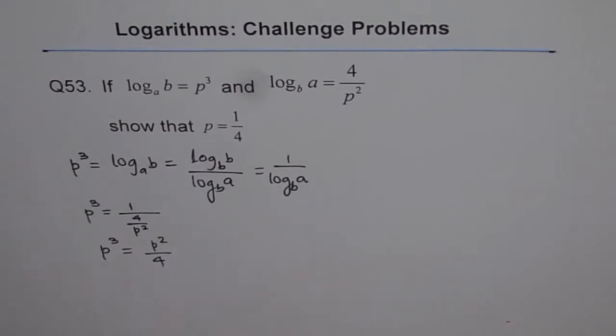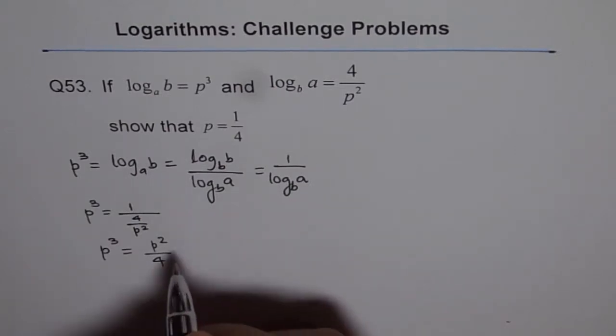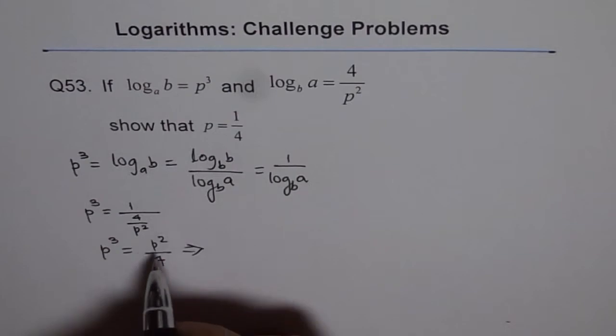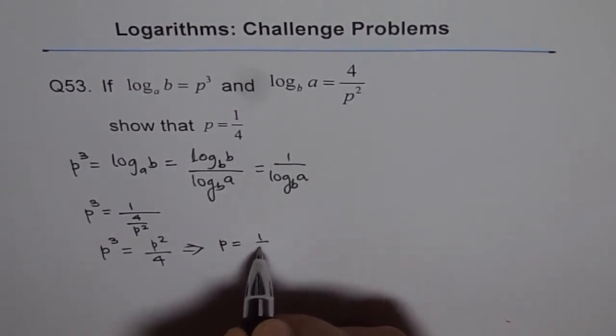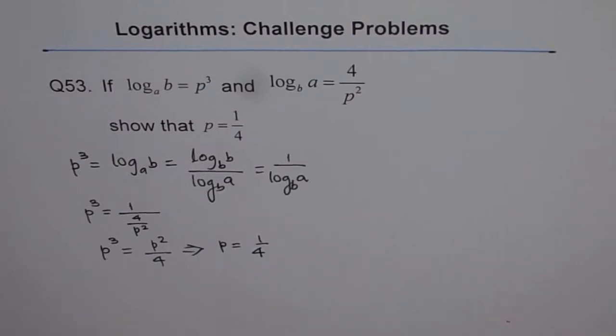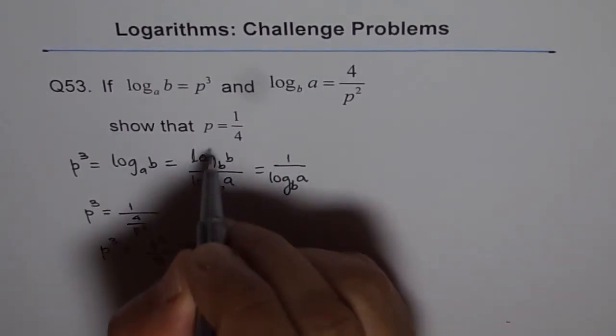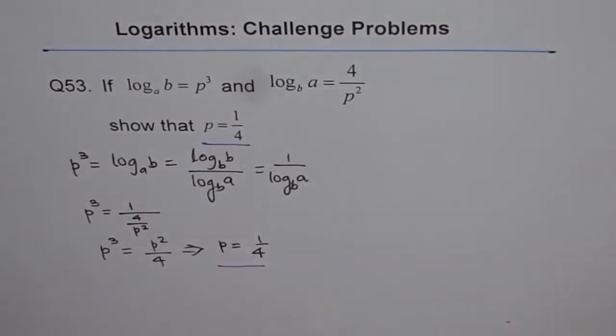If we divide by P squared on both sides, what do we get? So this implies if I divide by P squared, I get P equals 1 over 4. So we get what we really wanted to prove. So we have shown that P equals 1 over 4.